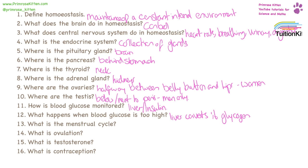What is the menstrual cycle? This happens each month in women. It's a build up and release of blood in the uterus. What is ovulation? That is when an egg is released.